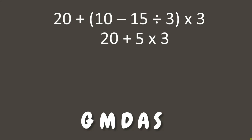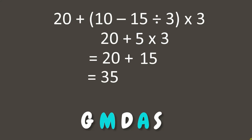According to the rule, we multiply first: 5 times 3 equals 15. Then add 20, giving us the final answer of 35.